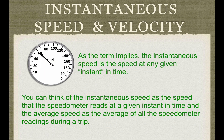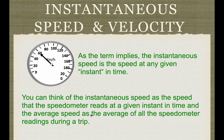Instantaneous speed is the speed at any given instant in time. The best example is the speedometer — you look down while driving and it says 60 kilometers per hour; that's your instantaneous speed. If you include the direction, it becomes your instantaneous velocity. You can think of instantaneous speed as what the speedometer reads at any instant, while average speed is the average of all speedometer readings during a trip.